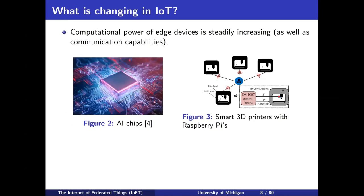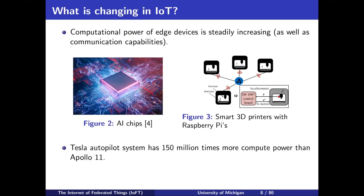But what is changing nowadays? The computational power of our devices is steadily increasing. Just in Tesla, the car itself has compute power equivalent to more than 500 MacBook Pros. AI chips are steadily infiltrating the market. It's very rare now to buy a 3D printer without a Raspberry Pi. Raspberry Pi used to cost thousands of dollars, and now the highest build is just a hundred dollars. We have this immense computational power right now at our edge devices.